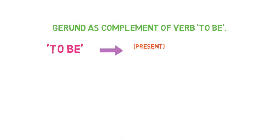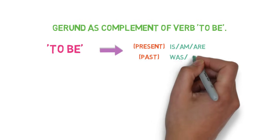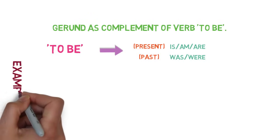In present, it is is, am and are. In past, it is was. Let's see examples of them.